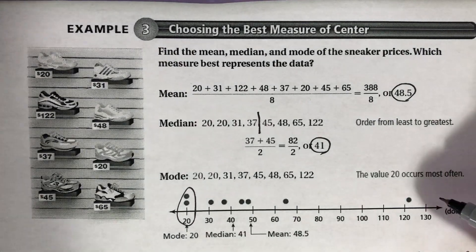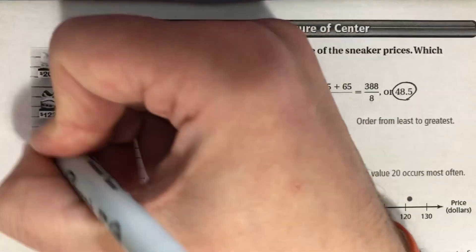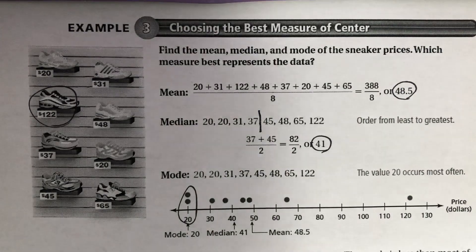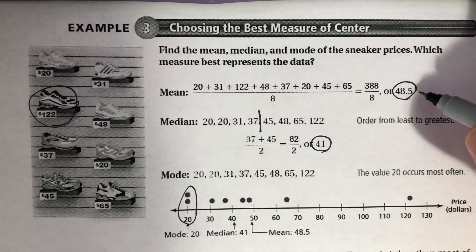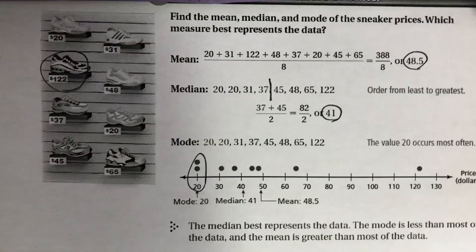And then the mode was the $20 pair of shoes because there were two pairs of shoes that cost $20. So you're going to notice there's a significant outlier over here. That was the very expensive pair of sneakers that were $122 compared to the others. And that certainly affected the mean. It caused the mean to be much, much higher.